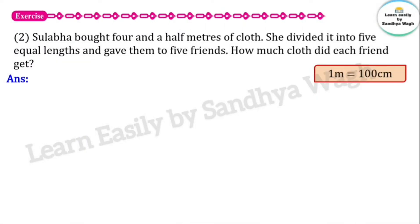Next question: Sulabha bought 4 and a half meters of cloth. She divided it into 5 equal lengths and gave them to 5 friends. How much cloth did each friend get? Sulabha bought 4 and a half meters of cloth.